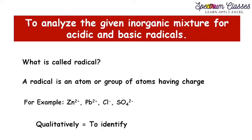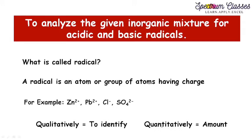The next term is qualitative. Sometimes the aim of the experiment is written as qualitative analysis of a given salt mixture for acid and basic radicals. Qualitative means only to identify the cations or anions present in the salt mixture. The opposite term is quantitative, which means measuring the amount of cations and anions present — as done in volumetric analysis. This is qualitative analysis, not quantitative.